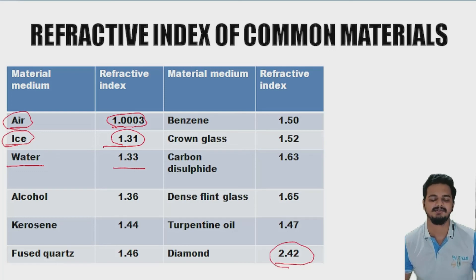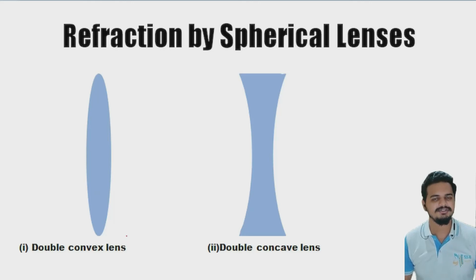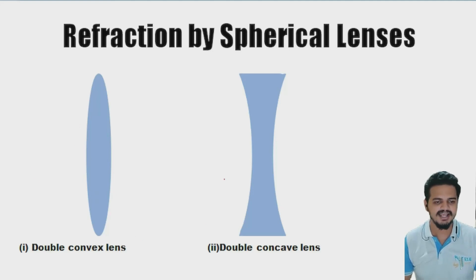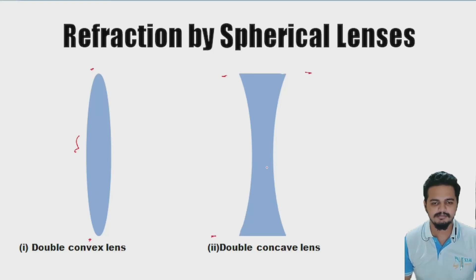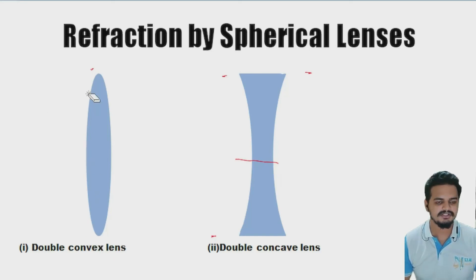Just like mirrors, there are two types of spherical lenses. There is a double convex lens and a double concave lens. A convex lens is bulged on both sides — the center is very broad and it narrows toward the edges. A concave lens is the opposite — the edges are broad but the center is narrow.